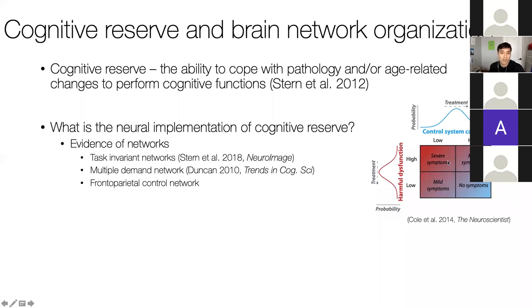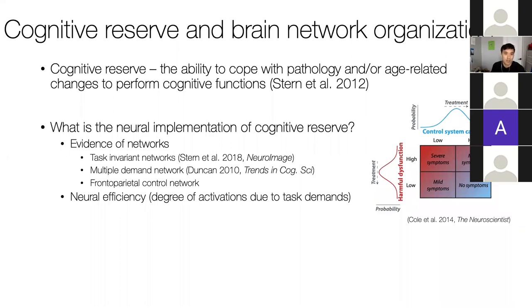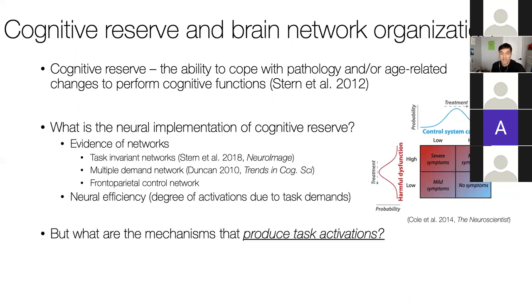One hypothesis from my advisor is that the interplay of pathology or harmful dysfunction with control system capacity or network integrity of these networks will determine the manifestation of cognitive symptoms. For example, if you have high amounts of harmful dysfunction yet low control system capacity, you might manifest severe cognitive symptoms. In contrast, if you have high control system capacity, you may be able to mitigate those symptoms. Another notion correlating with cognitive reserve is neural efficiency—the degree of task activations, with regions that activate more being deemed more neurally inefficient.